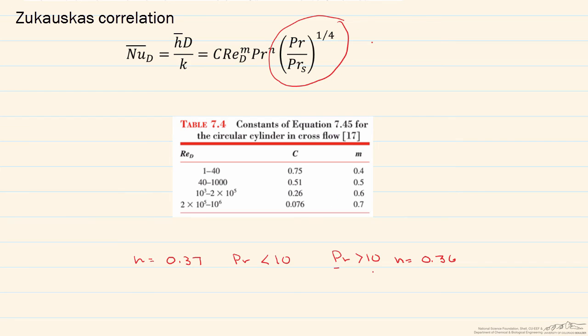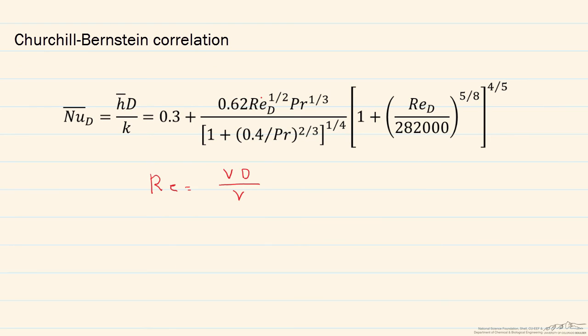So for this correlation, the properties are found at T infinity except for our Prandtl at the surface, which is looked up at the surface temperature. And finally, in this correlation, everything here is looked up at T infinity.